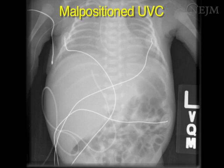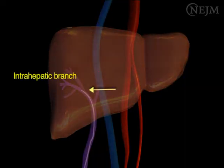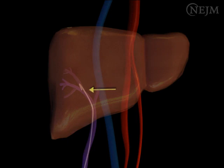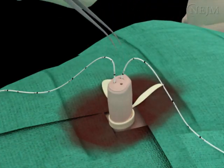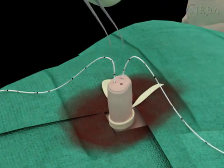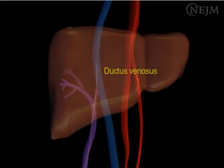If the catheter meets resistance before it reaches the predetermined distance, it has most likely entered the portal system, become wedged in an intrahepatic branch of the umbilical vein, or doubled back on itself. In these circumstances, pull the catheter out of the vein approximately 4 centimeters and rotate the catheter as you reinsert it into the vein. Occasionally this will allow the tip to slip through the ductus venosus. Often it is necessary to repeat this maneuver several times.